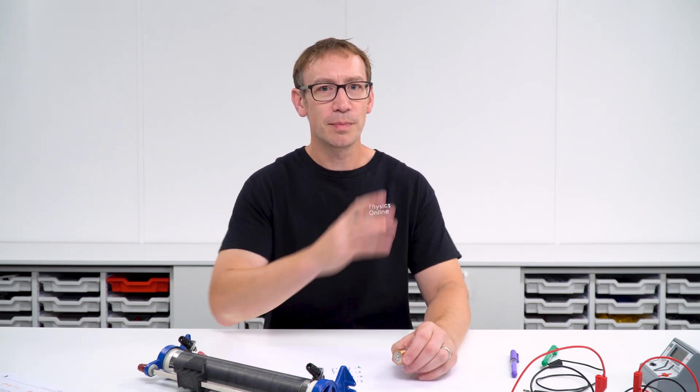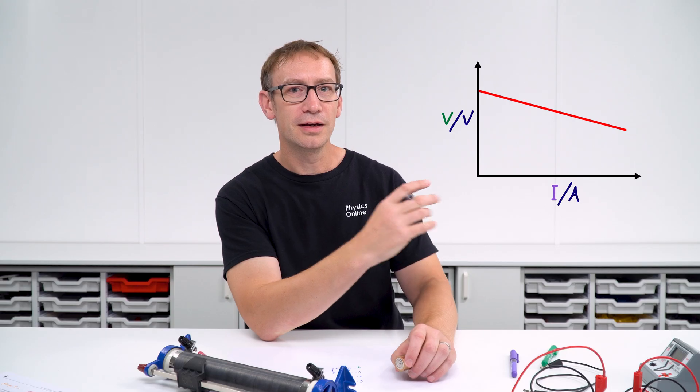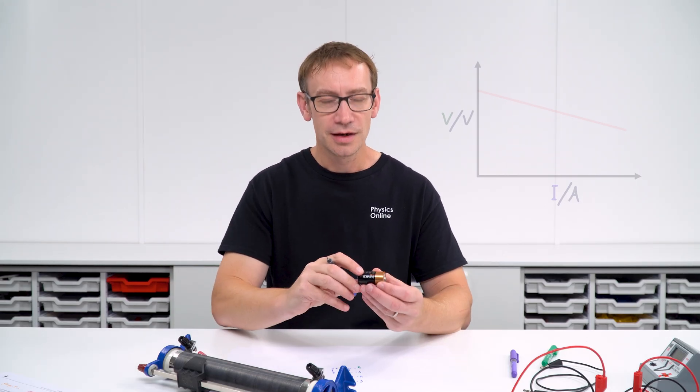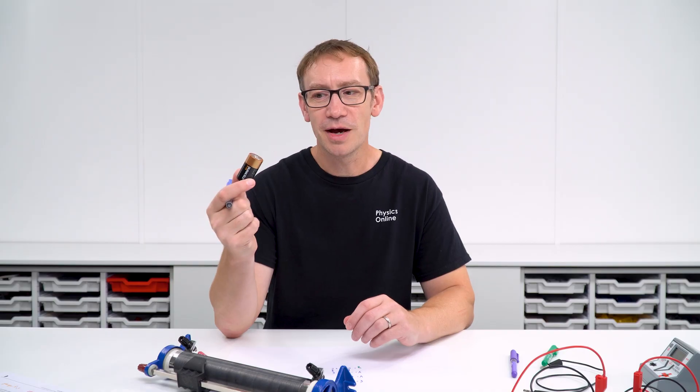So by taking values for the current in the circuit as you change the external resistance using something like a variable resistor, we then get values for the terminal PD, and when we plot them we get this straight line where the gradient and the y-intercept give us some data about the internal resistance and EMF of a cell.